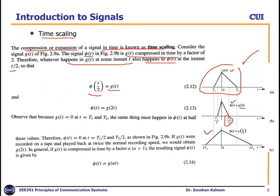Whatever is happening at T1 in g(t) is happening at T1/2 in phi(t). These two will be equal when phi(t/2) equals g(t). Substituting, phi(t) equals g(2t). Since g(t) is zero at t equals T1 and T2, phi(t) is also zero at t equals T1/2 and T2/2, as shown in the figure.